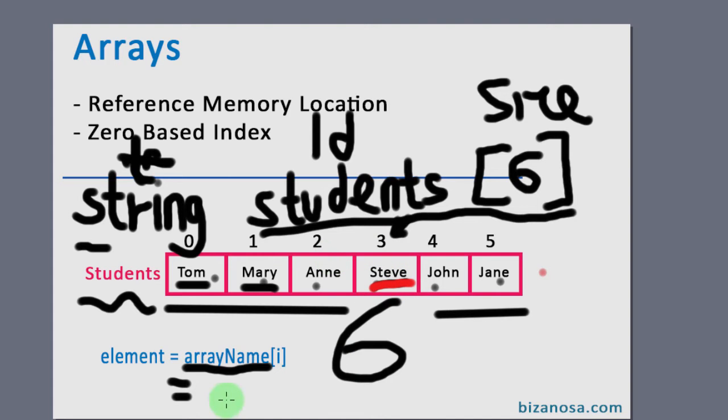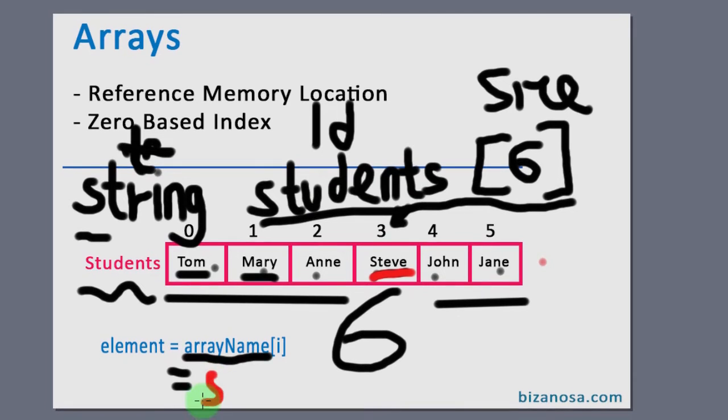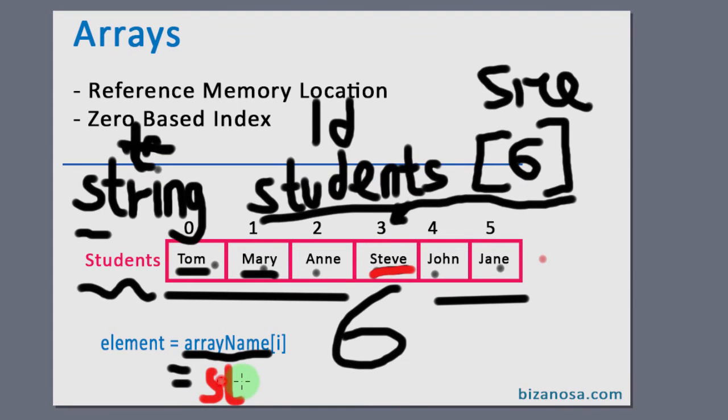and then the index location. Now the index location of this is three. So if you want to access Steve, it would be the name of the array, which is students, and then the index location using square brackets, three.